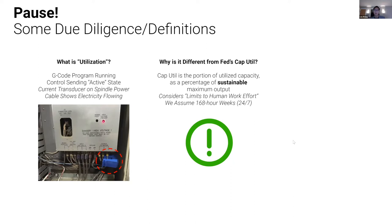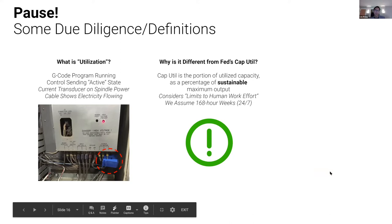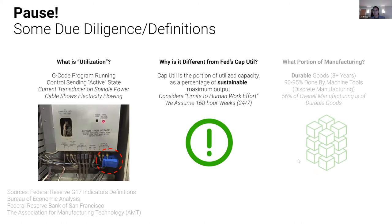Some of you from an economics background may be more familiar with the Federal Reserve's capital utilization metric. Cap util is typically around 60–70–80%, because it's defined as utilized capacity as a percentage of sustainable maximum output — which is subjective and left to every factory owner to decide. It considers limits on human work effort, so that 60–70% utilization from the Fed might only be on an 80-hour week. Since we're attached all the time and monitor machines 24/7, we assume 160-hour weeks. So when you see 30% utilization, it means literally eight hours out of the day that machine is being used.